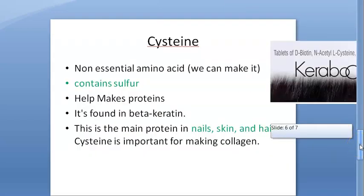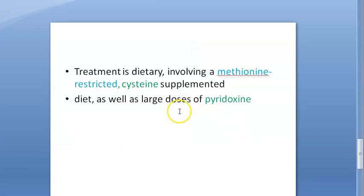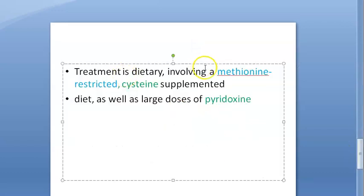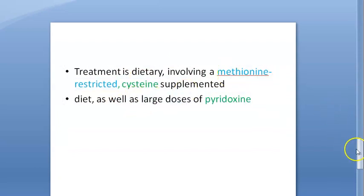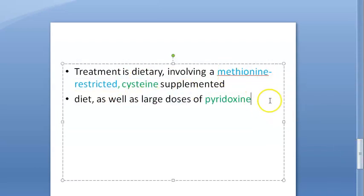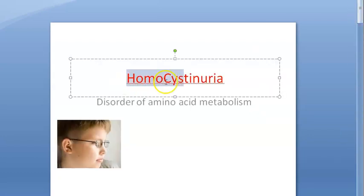To treat homocystinuria: follow a methionine-restricted, cysteine-supplemented diet along with large doses of pyridoxine, which is vitamin B6. That's it for homocystinuria.